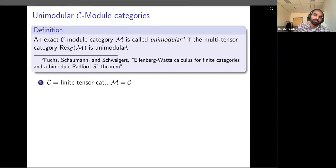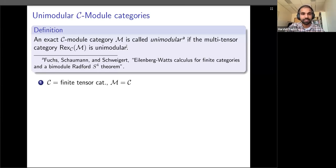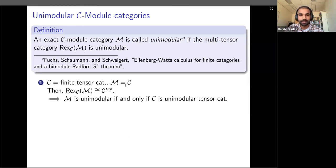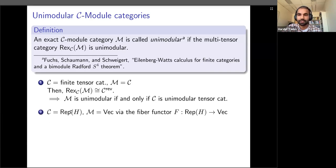To find out if it's an interesting notion, we need examples and applications. First example: if we take a tensor category and consider it as a module over itself, the category of endofunctors is C with the reversed monoidal product. In this case, C considered as a C-module is unimodular if and only if C is unimodular as a tensor category — so this notion generalizes unimodularity for tensor categories.